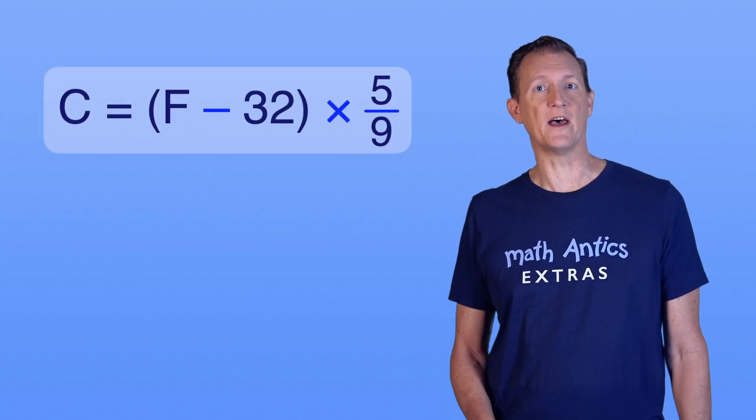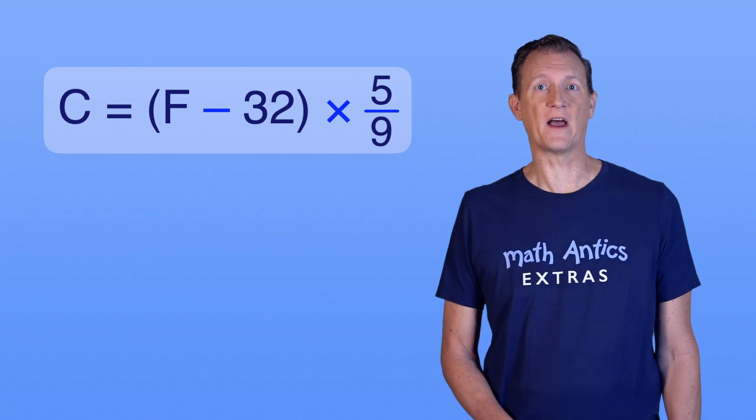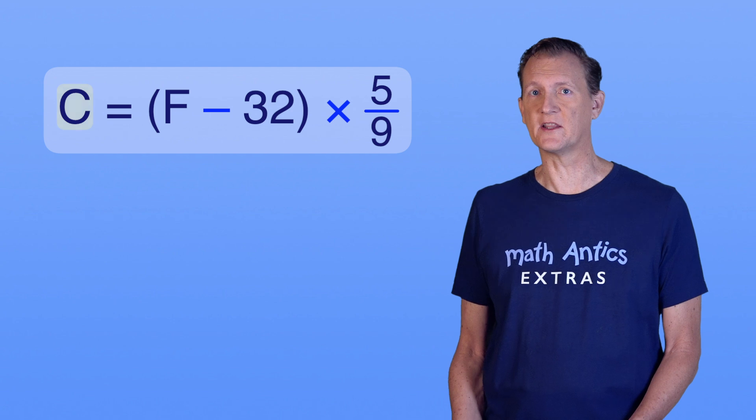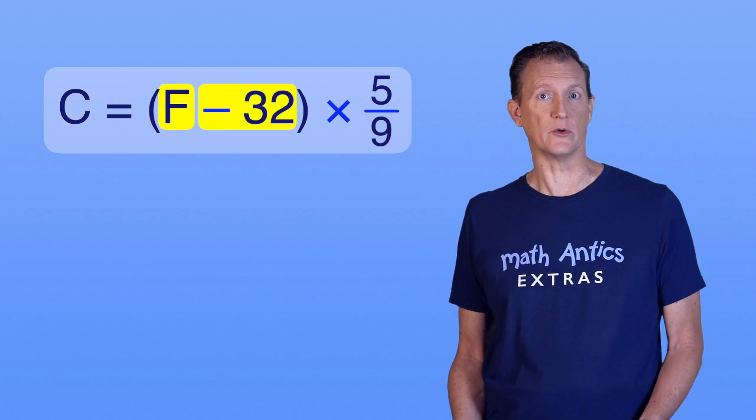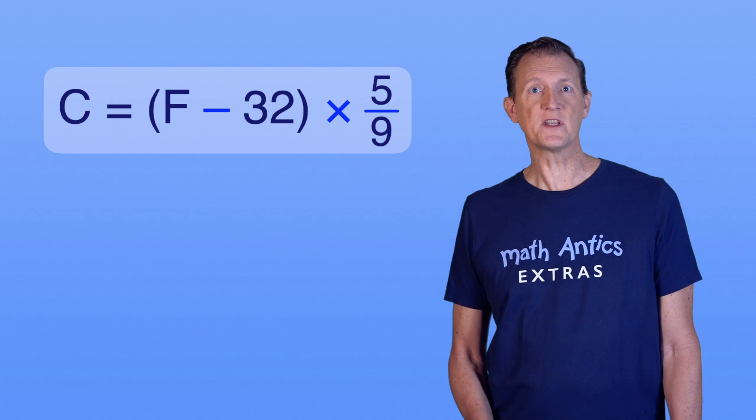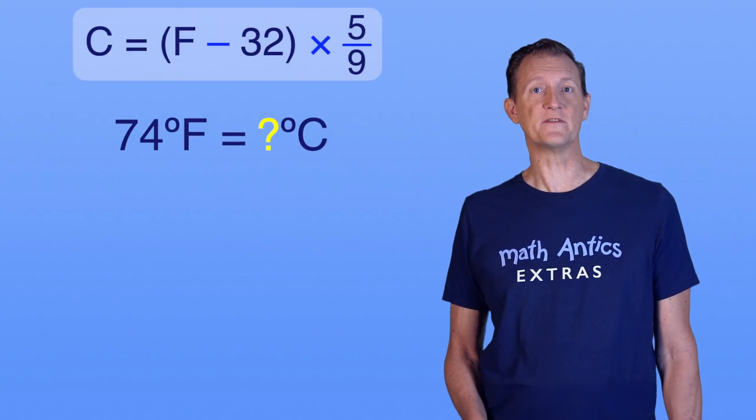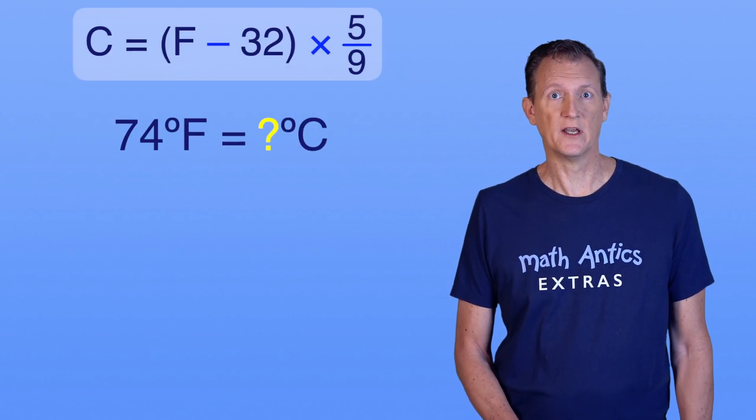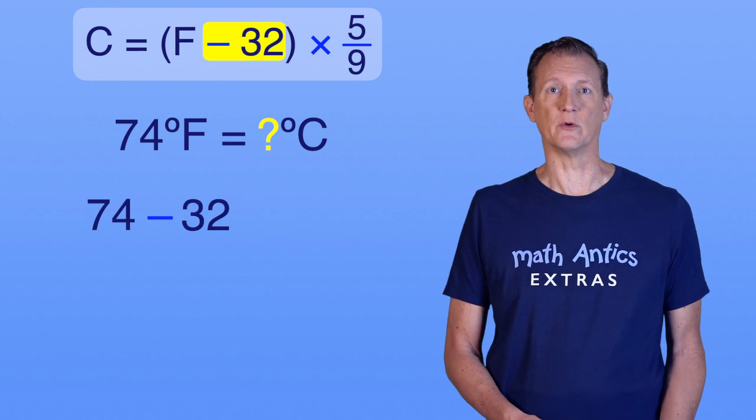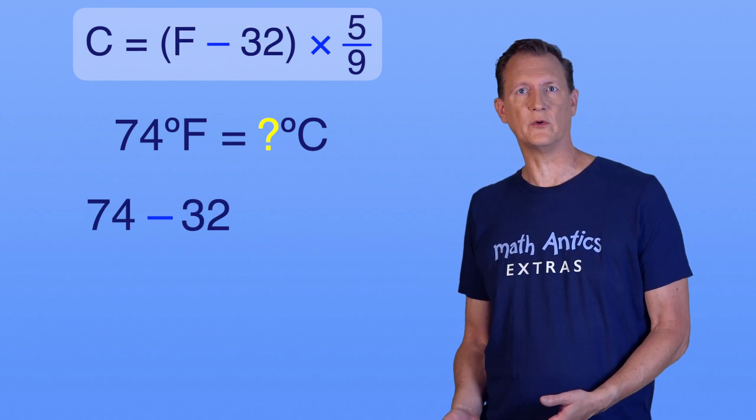For converting a Fahrenheit value to Celsius, we have C equals F minus 32 times 5 over 9. This tells us that to get the Celsius value, we take the Fahrenheit value and subtract 32. Then we multiply that by 5 over 9. Let's use that procedure to find out what 74 degrees Fahrenheit actually is in Celsius. First, we take our Fahrenheit value, 74, and subtract 32. 74 minus 32 equals 42.